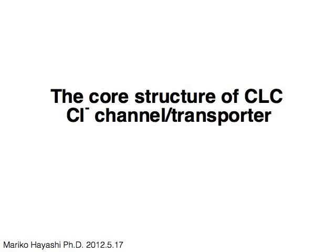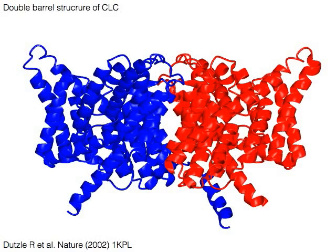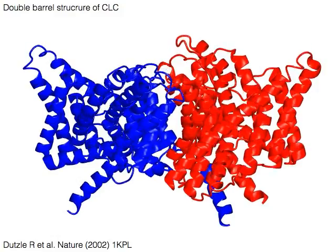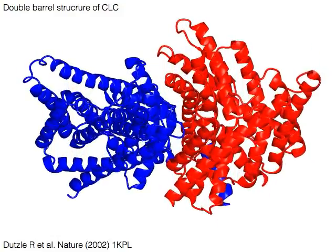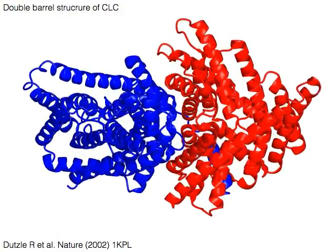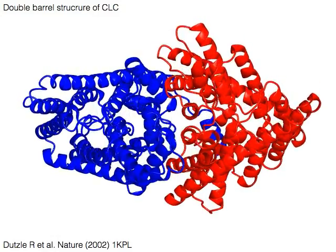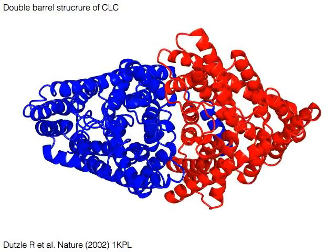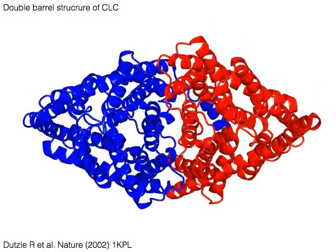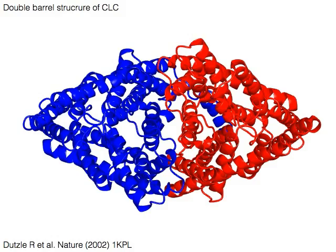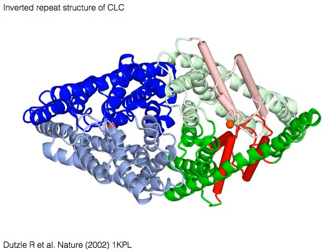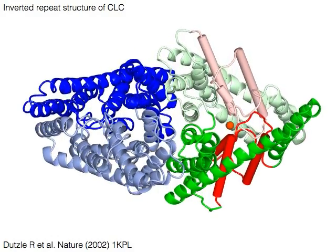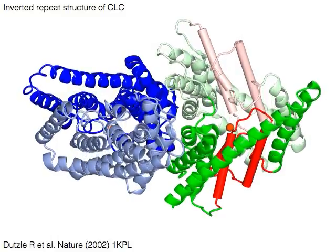The core structure of CLC chloride channel or transporter. CLC chloride channel or transporter forms a dimer which has a double barrel structure. Each monomer of CLC has an inverted repeat structure, shown in solid and light color.